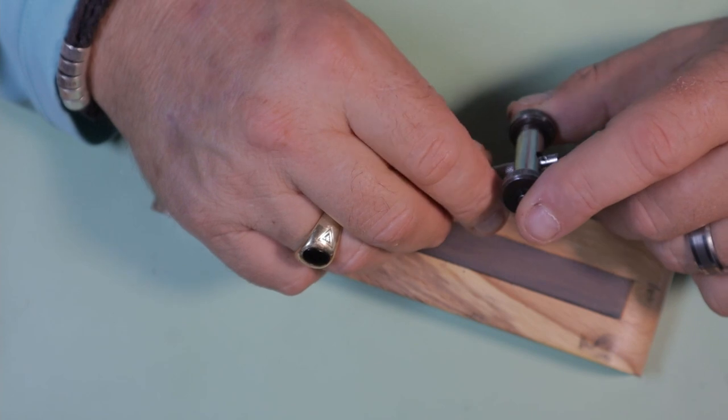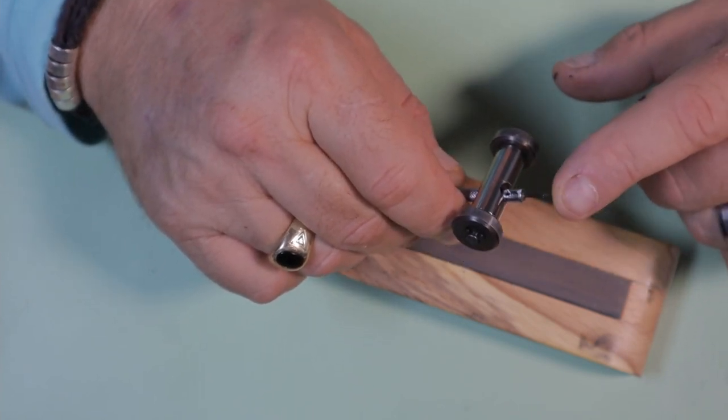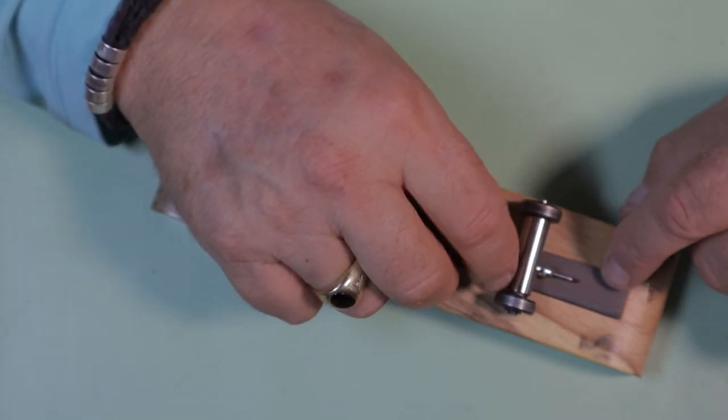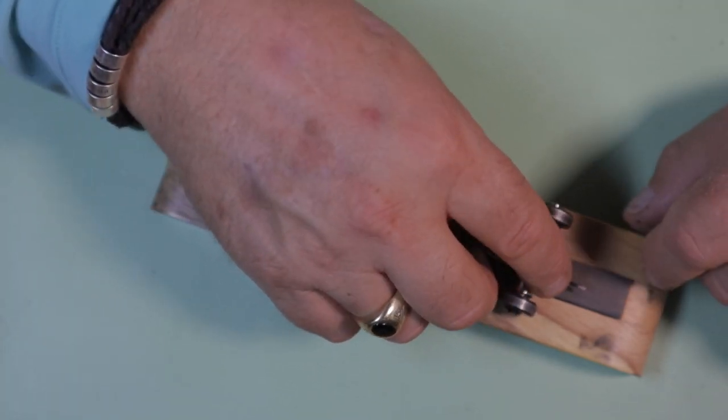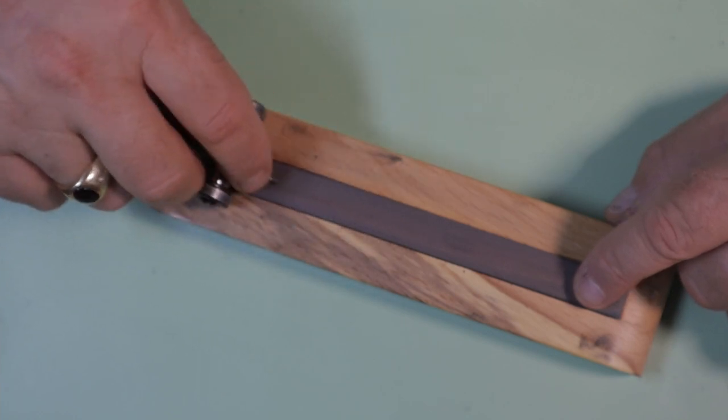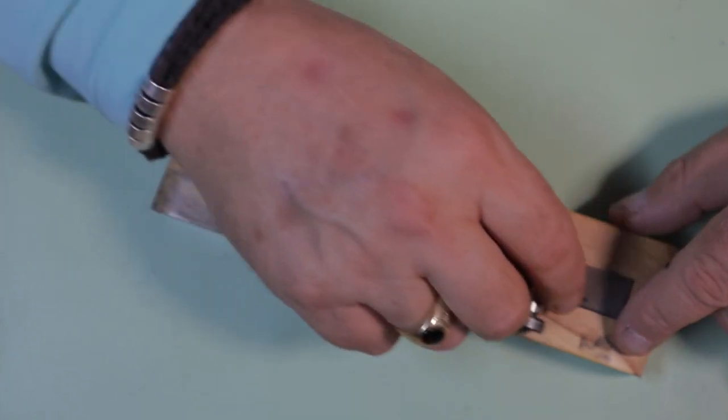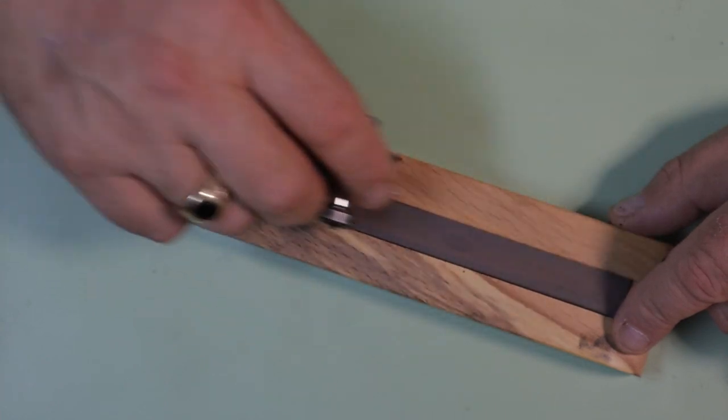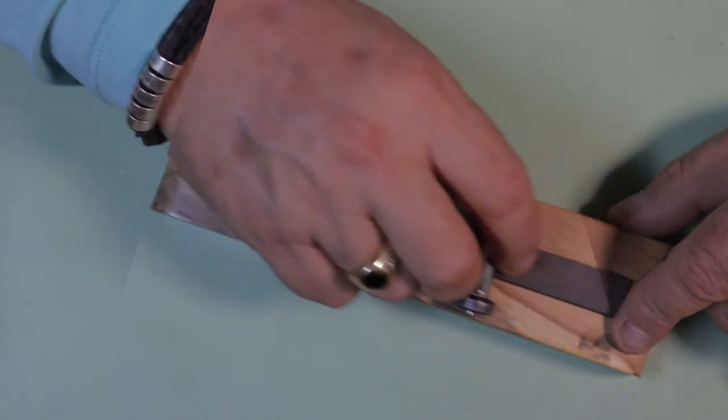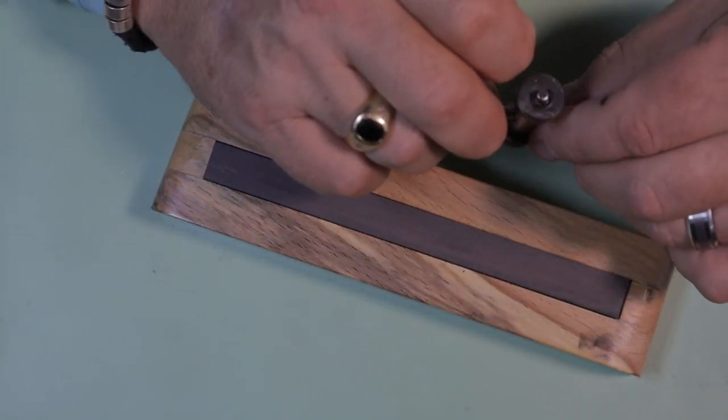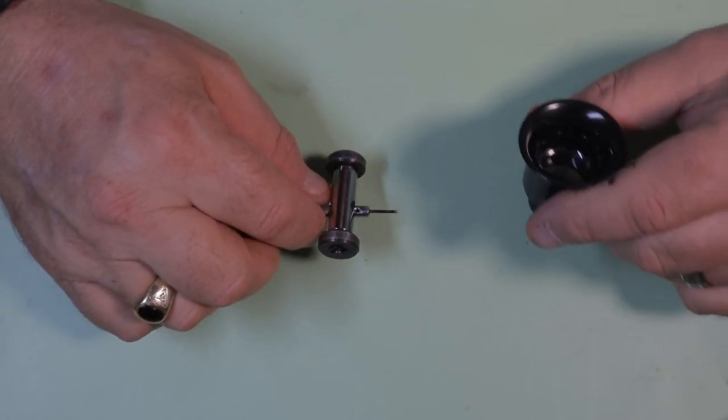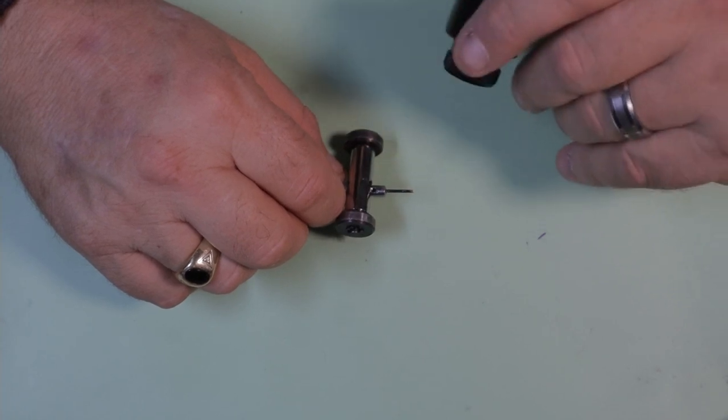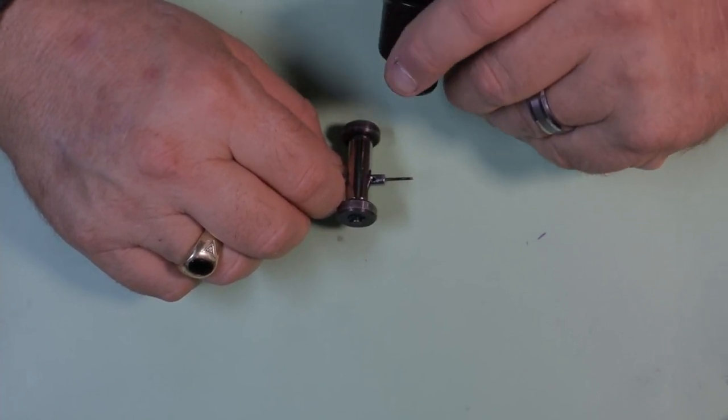Similar to sharpening tweezers, when you're sharpening or removing damage from a screwdriver blade you want to apply a small amount of pressure to the tip of the screwdriver as you draw it across the sharpening stone. Now how many strokes it's going to take really depends on how much damage it has but the other reason that we dress screwdrivers is to make sure that they fit the slots properly.